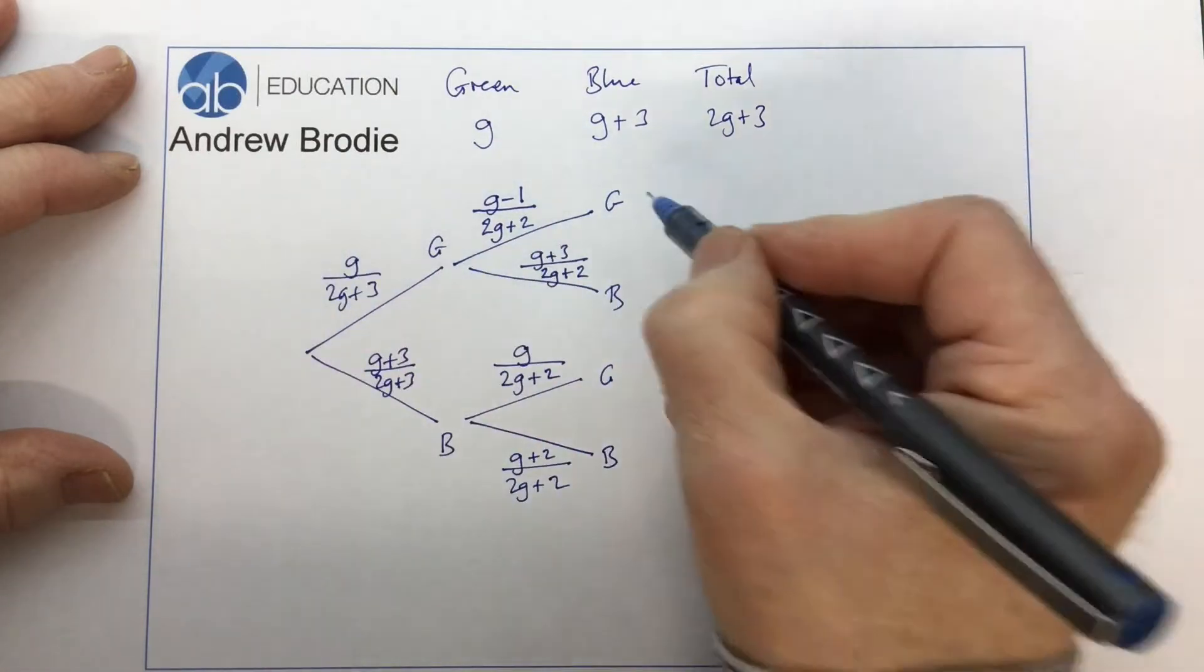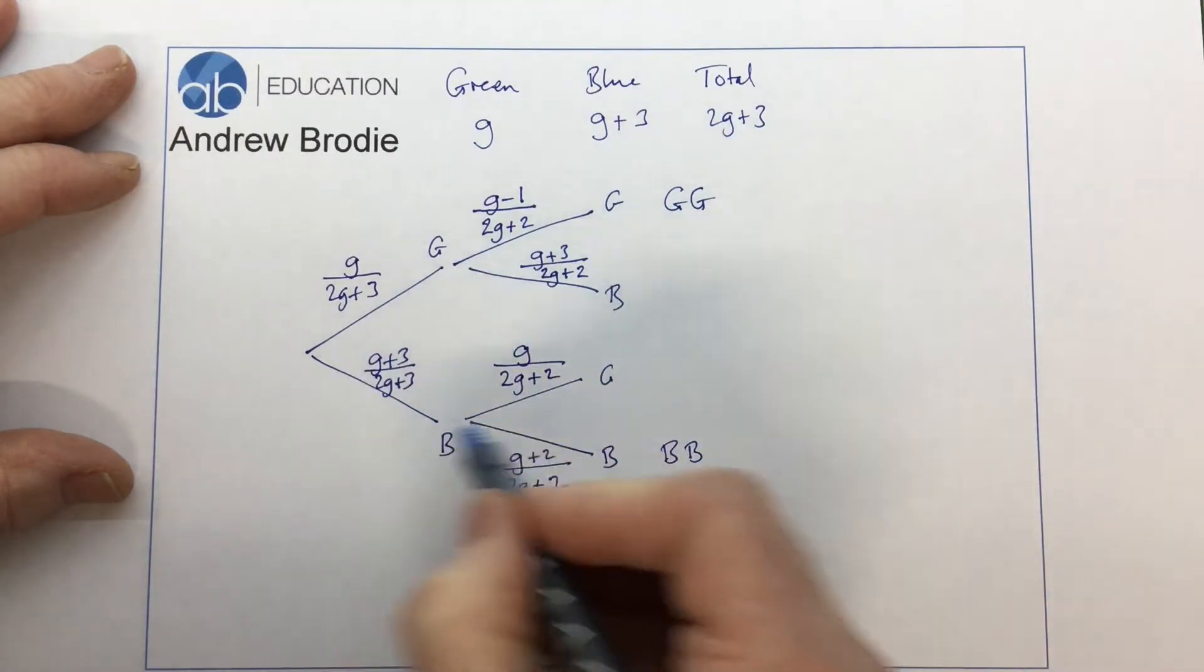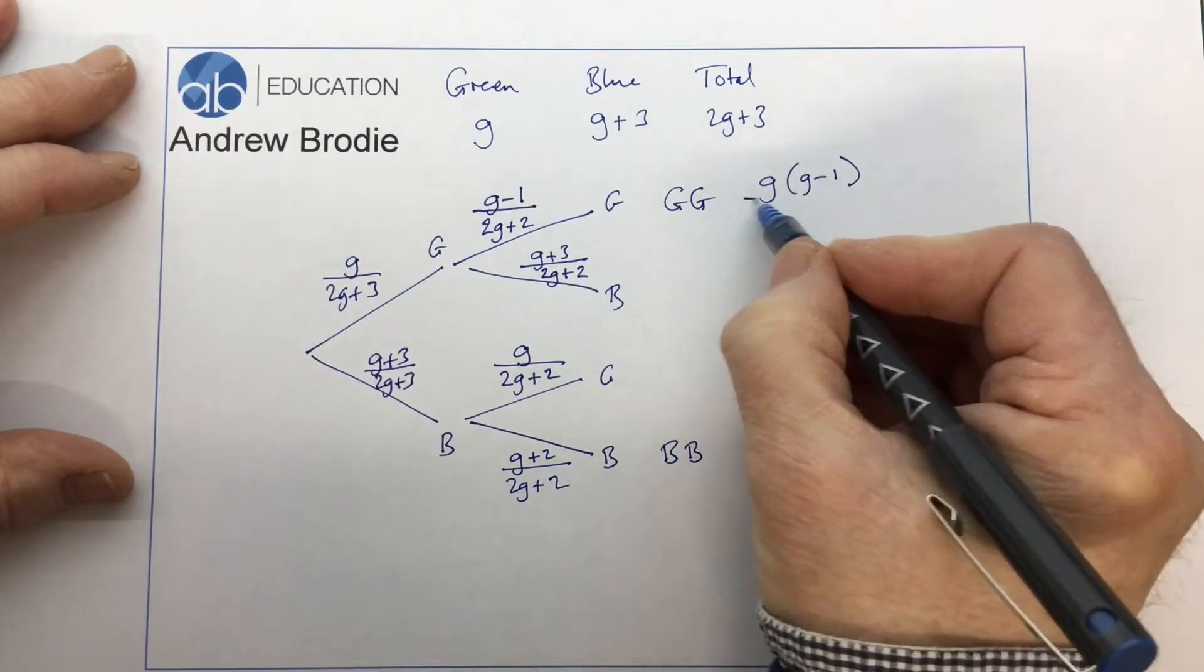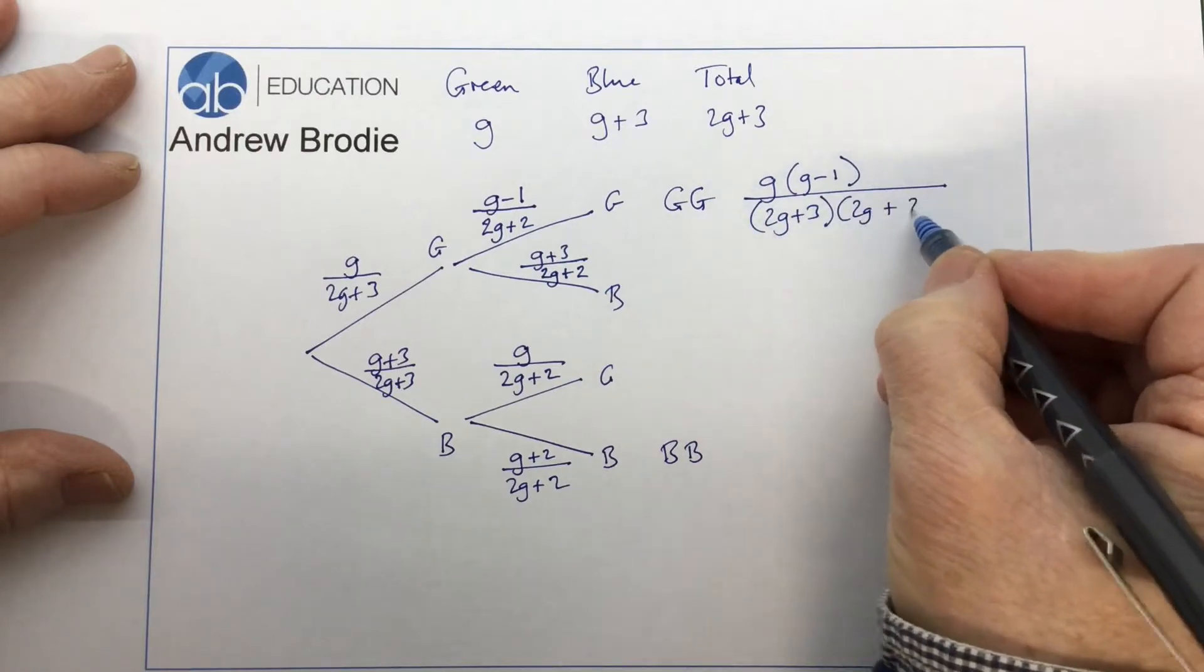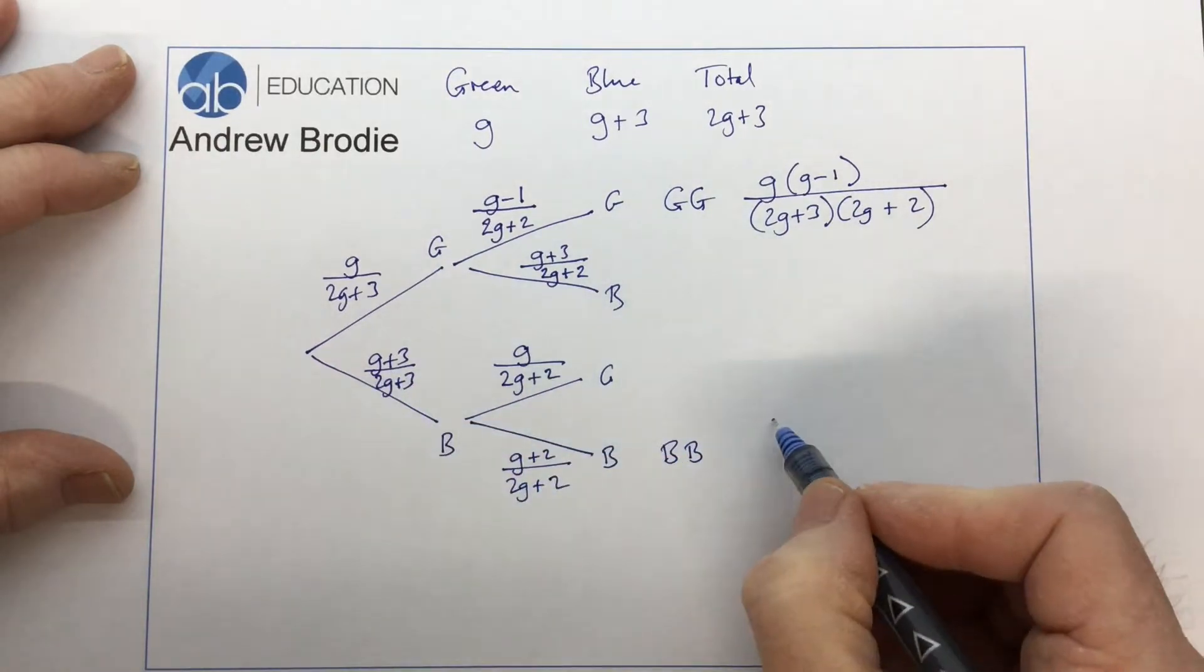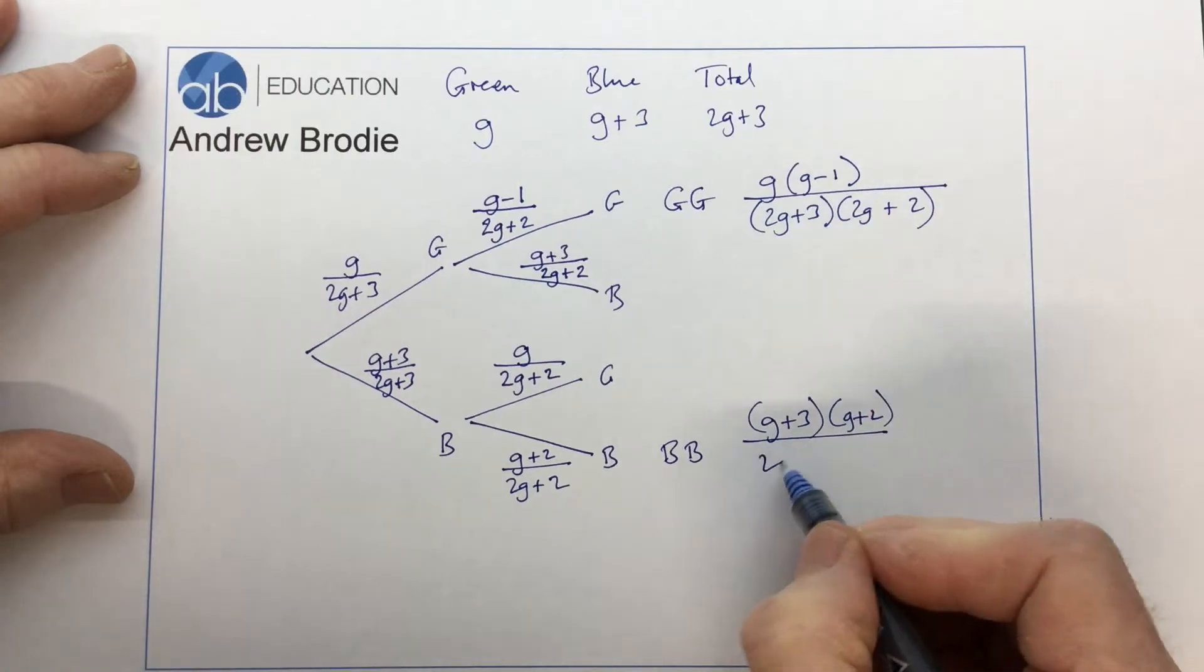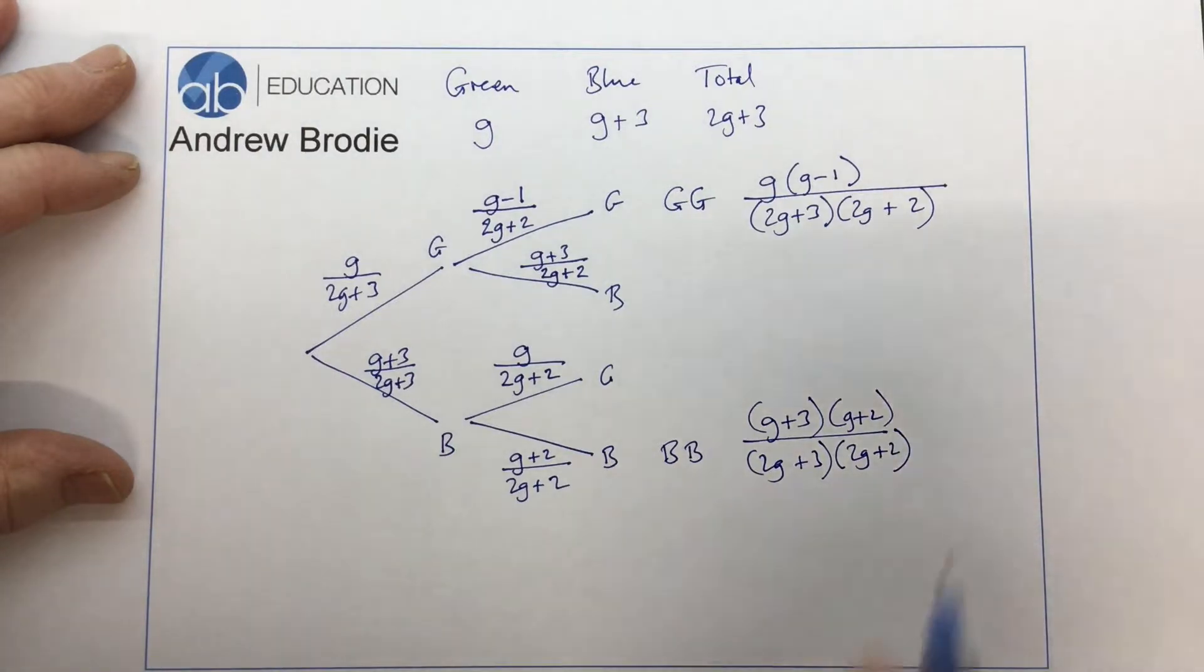So multiplying along here, we're interested in GG and BB. We're not interested in these branches at all. So let's multiply along these two. This one is going to be g times g minus 1, all over 2g plus 3 times 2g plus 2. And this one is going to be g plus 3 times g plus 2, all over the same denominator, 2g plus 3 times 2g plus 2.